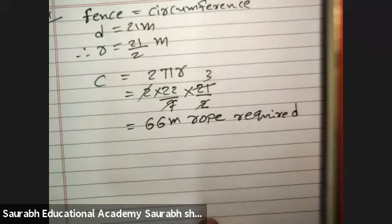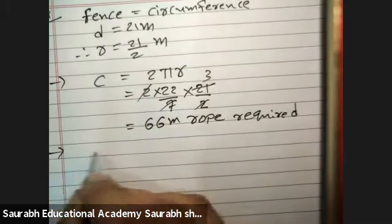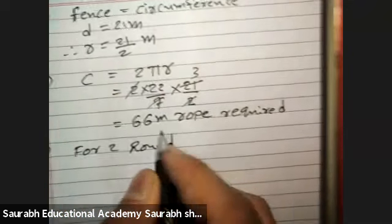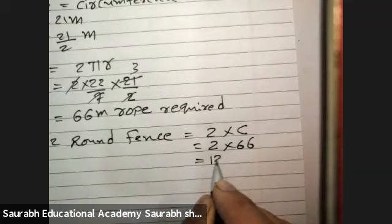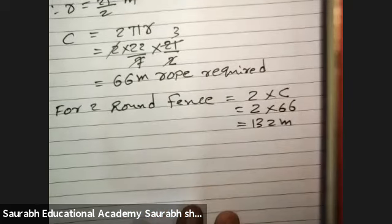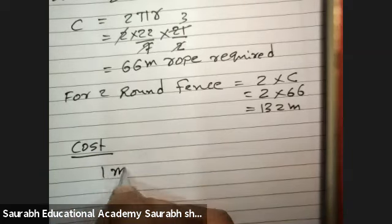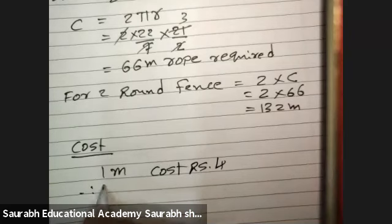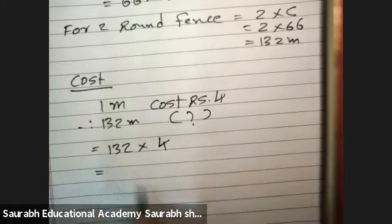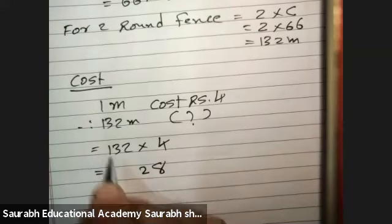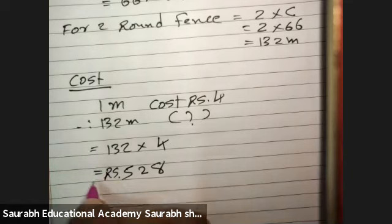He makes 2 rounds of fencing, so total rope = 2 × 66 = 132 m. Cost of rope is 4 rupees per meter. Therefore total cost = 132 × 4 = 528 rupees.